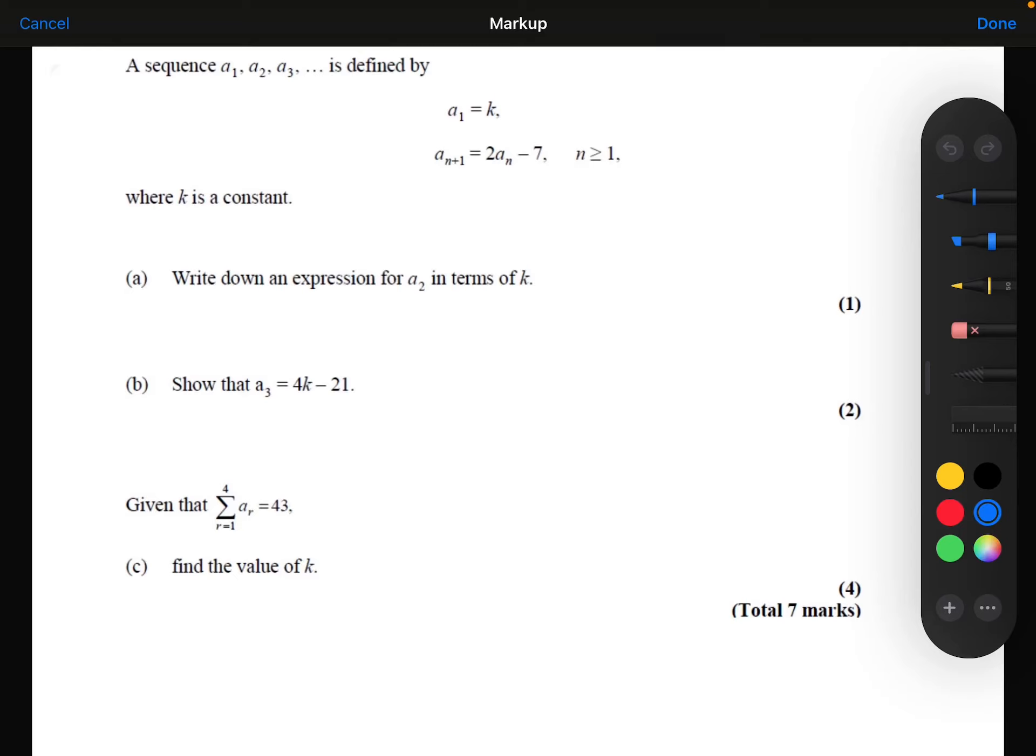Sequence a₁, a₂, a₃ is defined by a₁ equals k, and aₙ₊₁ is equal to 2aₙ minus 7, where n is greater than or equal to 1, and k is a constant.